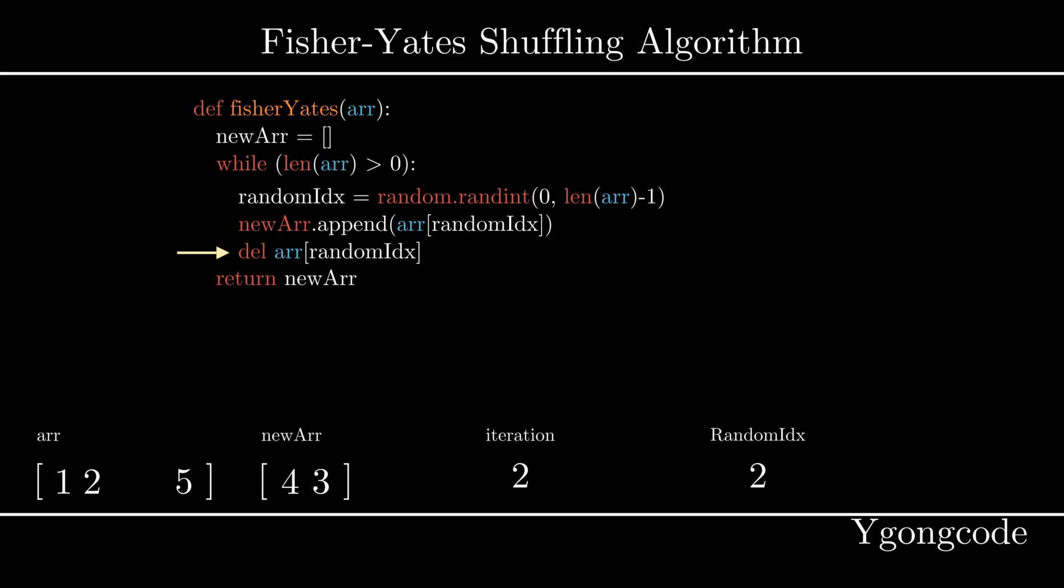We'll repeat this procedure until we have removed all the elements out of the input array. At the end, the output will be a randomly shuffled array.